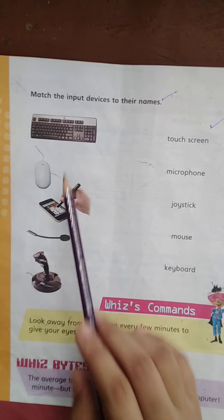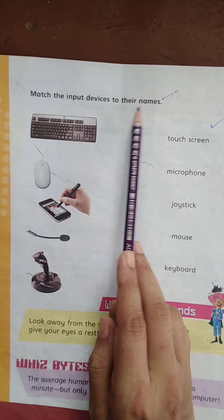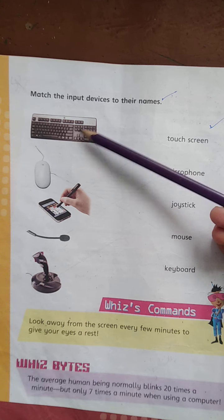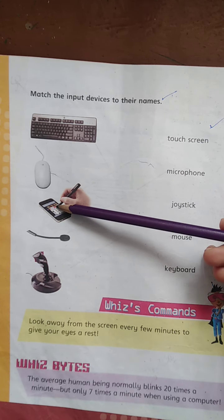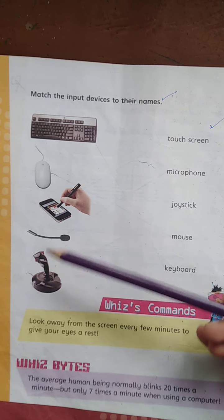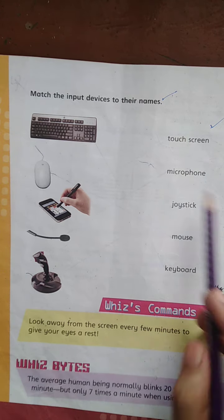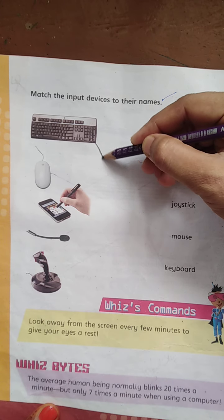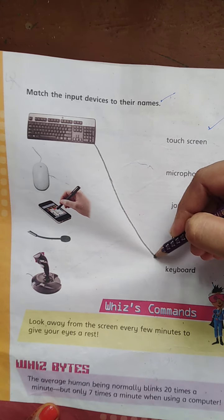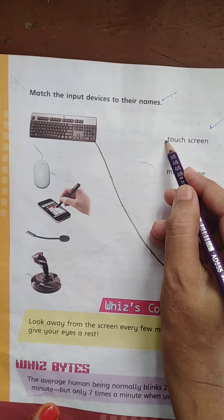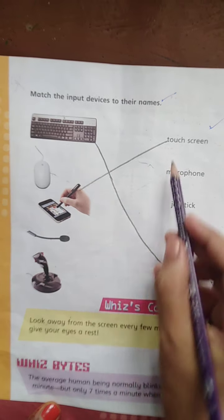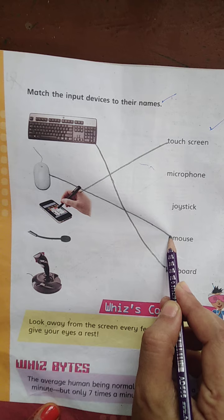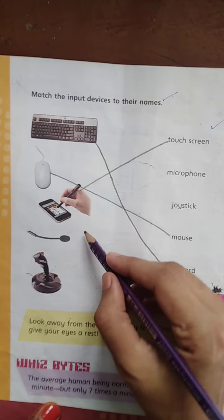The next page is book page number 20. Match the input devices to their names. Number one is keyboard, number two is mouse, number three is touch screen, number four is microphone, and the last one is joystick.